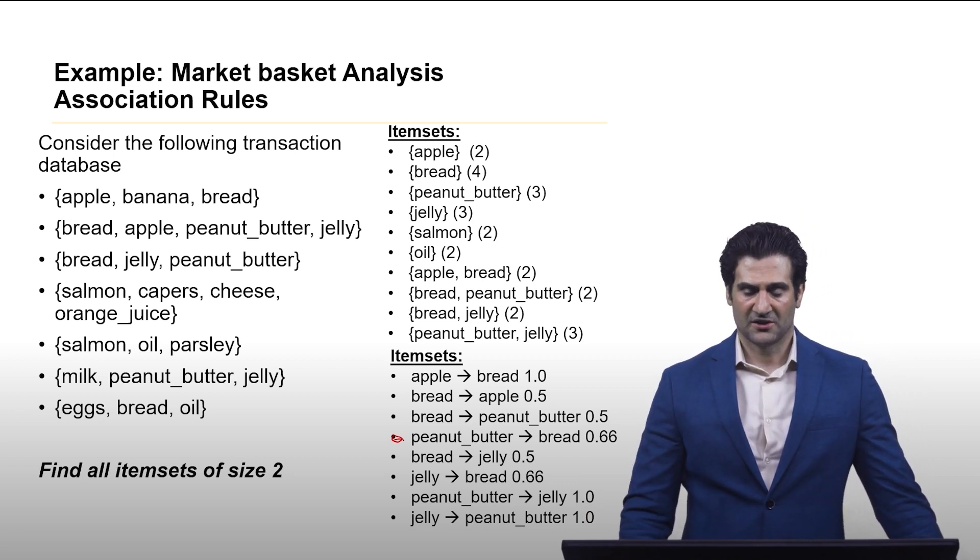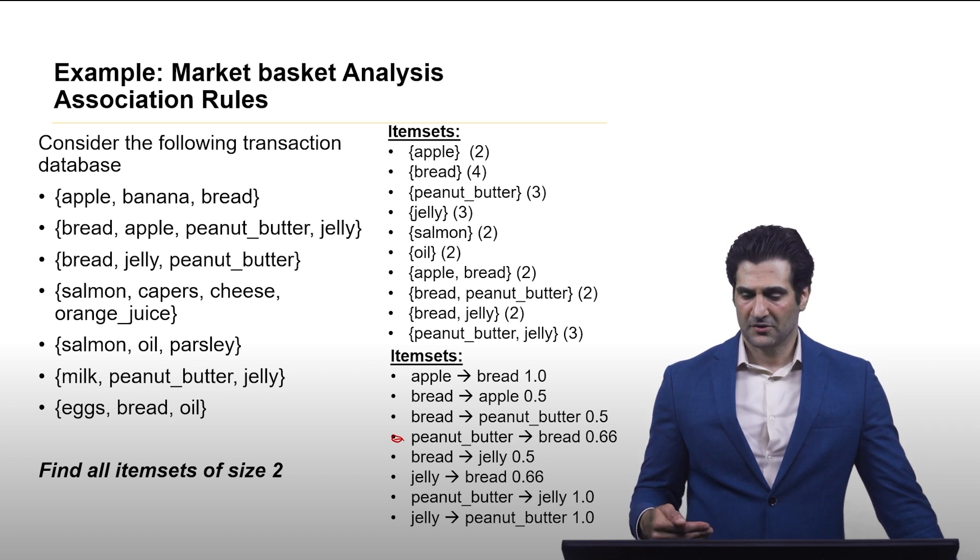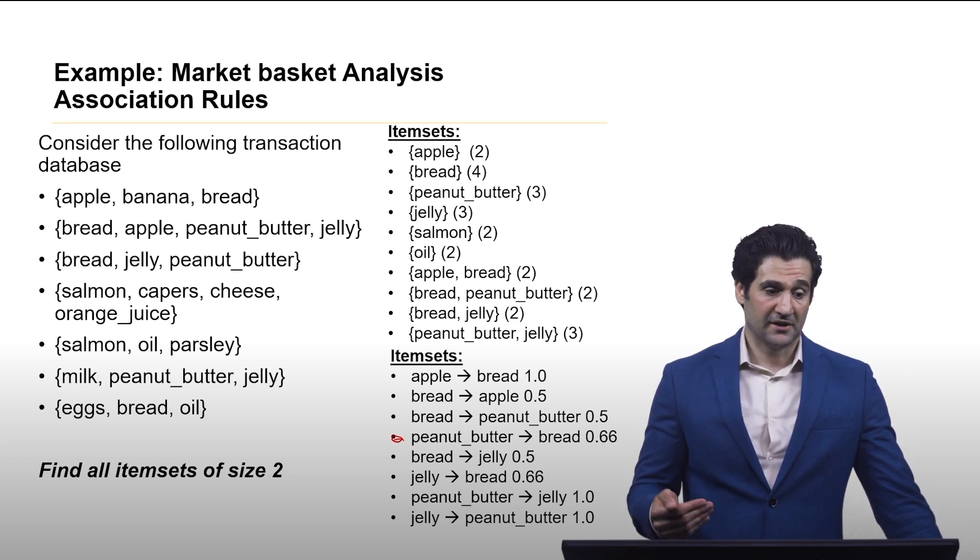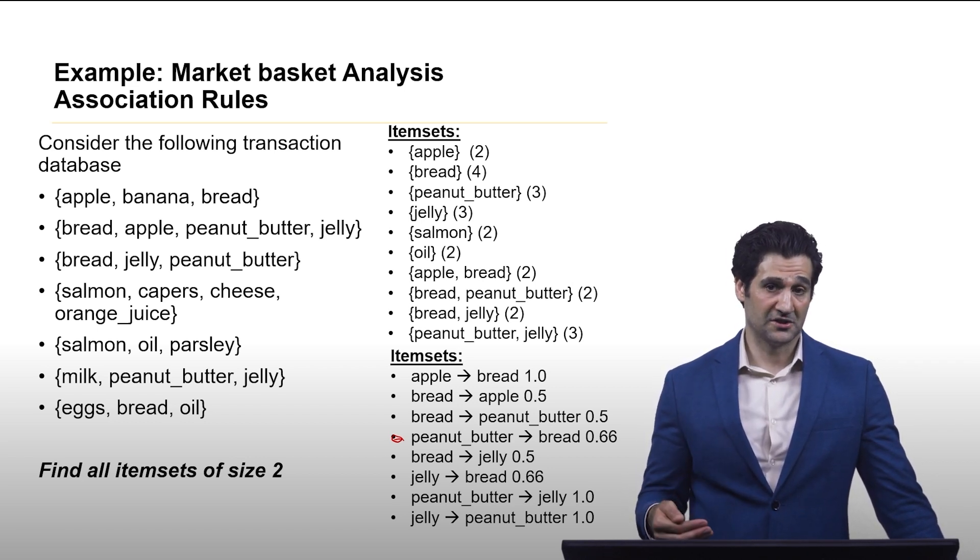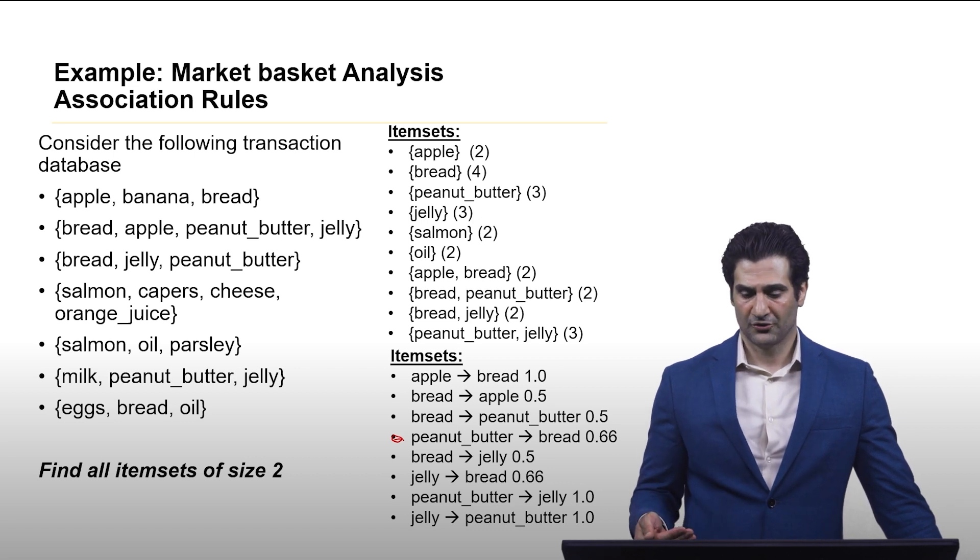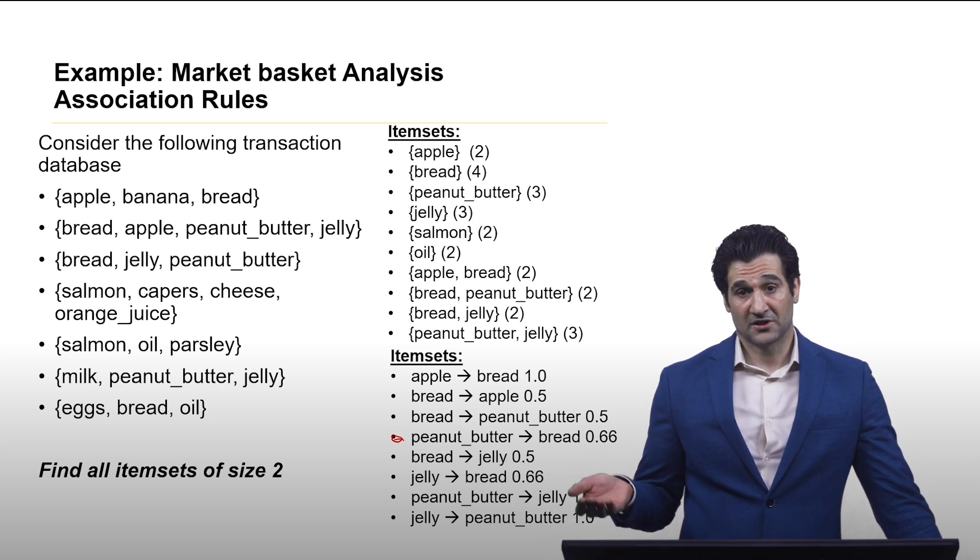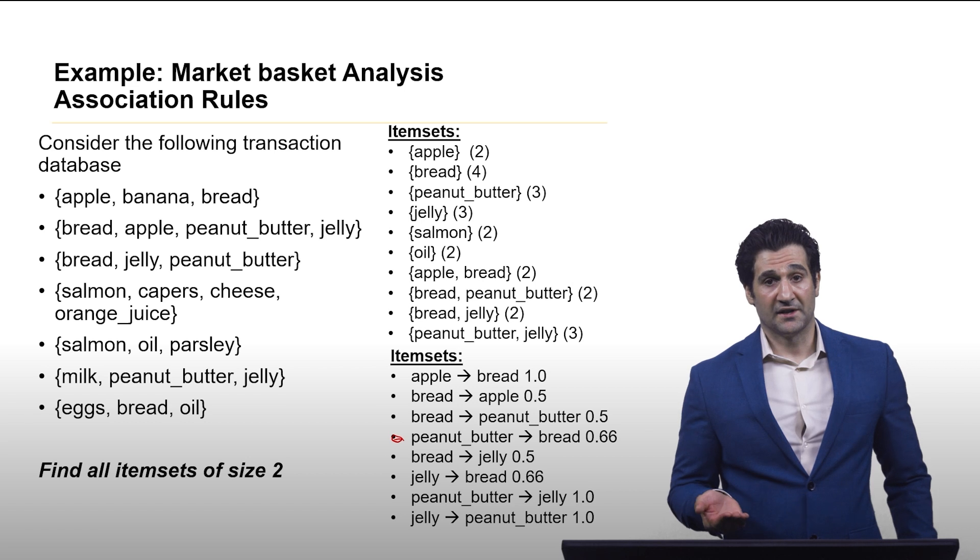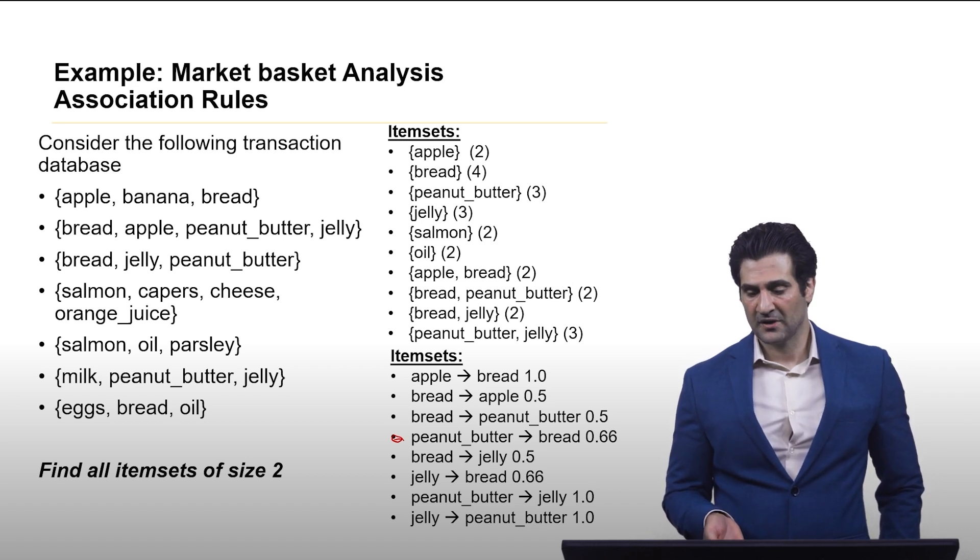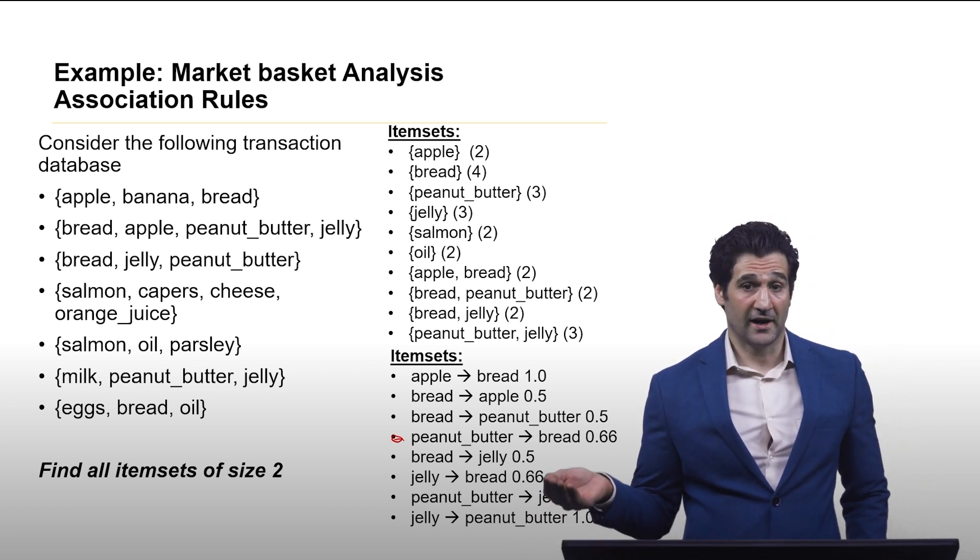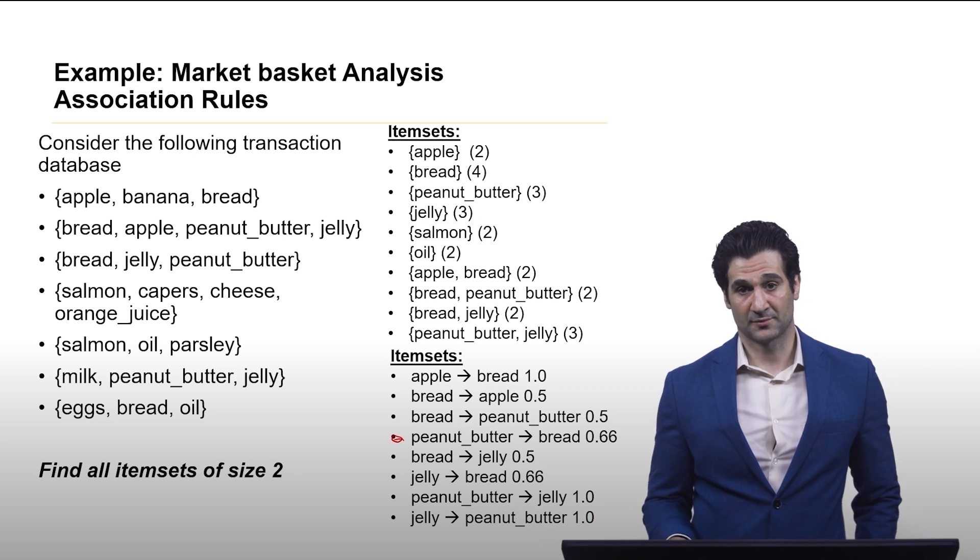You also have things that there may not be kind of this monotonic relationship between rules. So for example, if someone buys bread, it's only 50% chance that they buy jelly. But likewise, if they buy jelly, then the chance that they buy bread is now 66%.